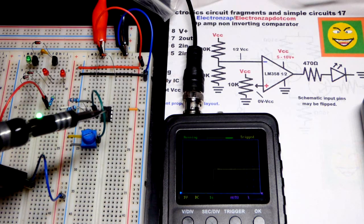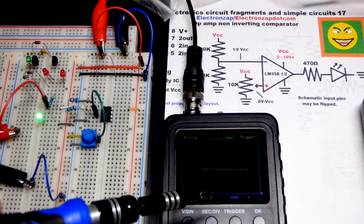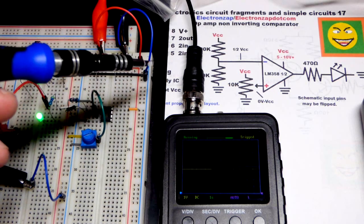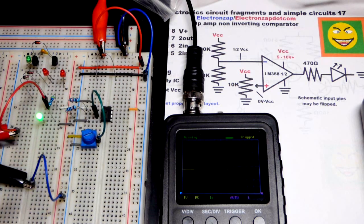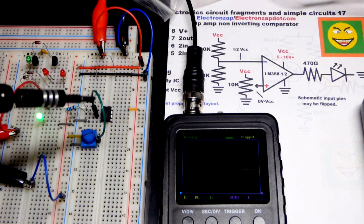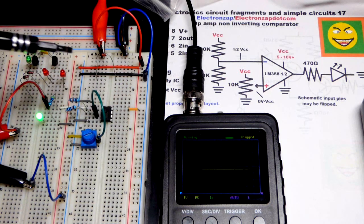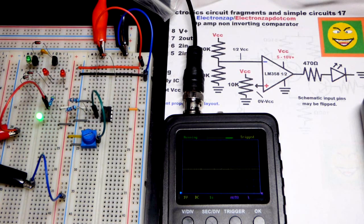The reason why we can use a single supply op amp is it goes to the negative rail. So we can just use, in this case, 5 volts and 0 volts to power this. A lot of op amps need a split power supply, where ground is actually halfway between the positive and negative rails. We'll talk about that in different videos.